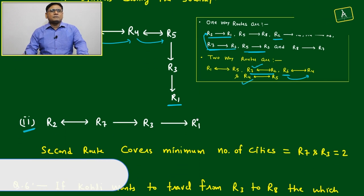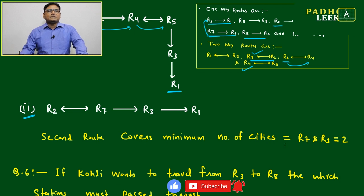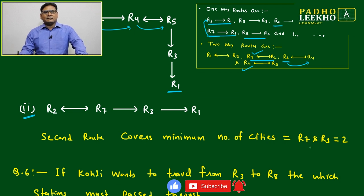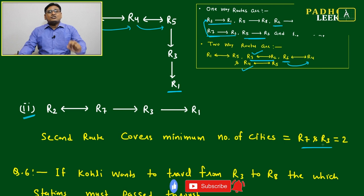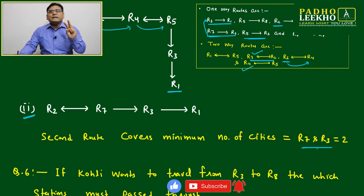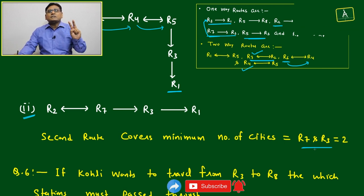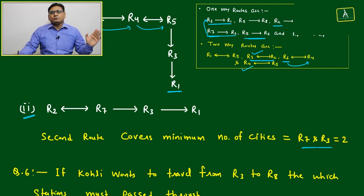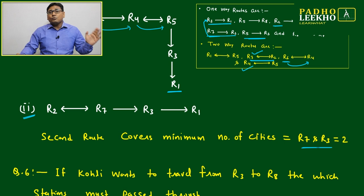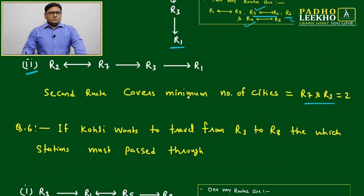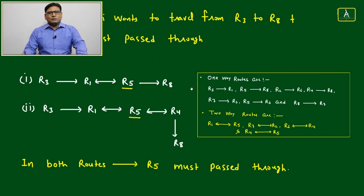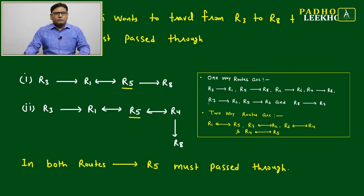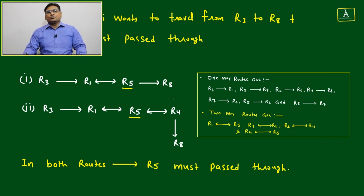The route R2 to R7 to R3 to R1 is the shortest route, covering the minimum number of cities. Number-wise, you only cross two intermediate stations — R7 and R3 — to reach R1 from R2.